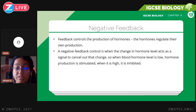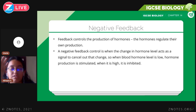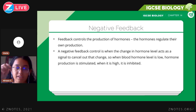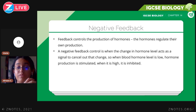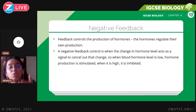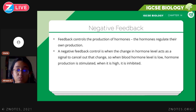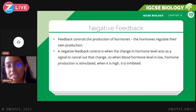We start with negative feedback. Feedback controls the production of hormones — the hormones regulate their own production. When the concentration of one hormone increases, it causes another to decrease, or vice versa. A negative feedback control is when the change in hormone level acts as a signal to cancel out that change — when one hormone reaches a certain level, it triggers secretion of another hormone that causes the initial hormone level to fall. This creates a balance.